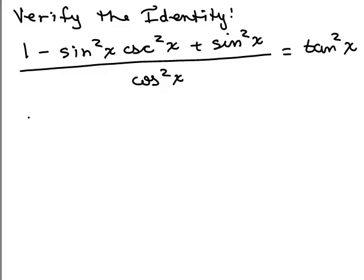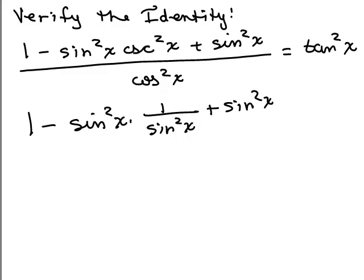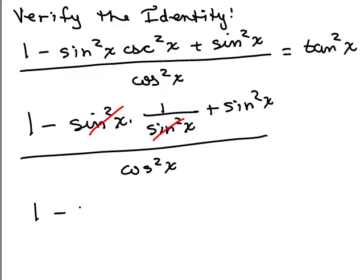Now, so you can either just change that to 1 or you could actually write that out. Well, that's the same thing as sine squared x times 1 over sine squared x plus this other sine squared x all over cosine squared x. And then the sine squareds cancel. Well, so I have 1 minus 1 plus sine squared x over cosine squared x.